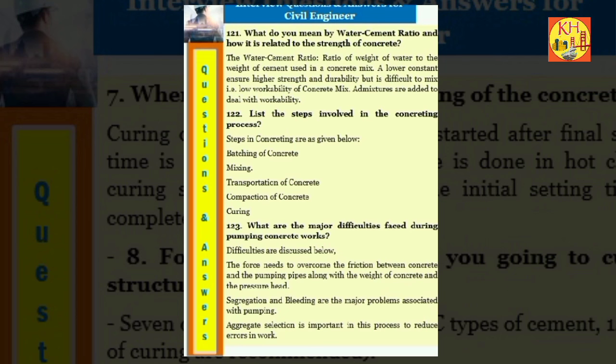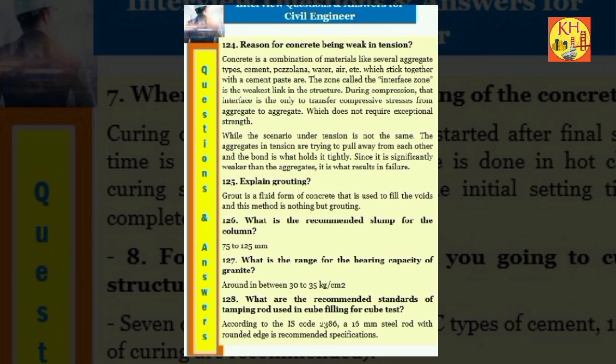Question 123: List the steps involved in the concreting process. Steps in concreting are as given below: Batching of concrete, Mixing, Transportation of concrete, Compaction of concrete, Curing. Question 124: What are the major difficulties faced during pumping concrete works? Difficulties are discussed below: The force needs to overcome the friction between concrete and the pumping pipes along with the weight of concrete and the pressure head. Segregation and bleeding are the major problems associated with pumping. Aggregate selection is important in this process to reduce errors in work.